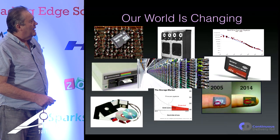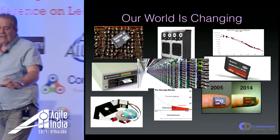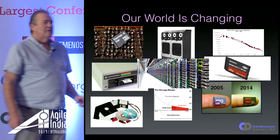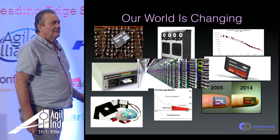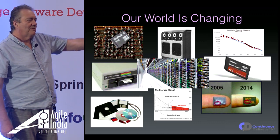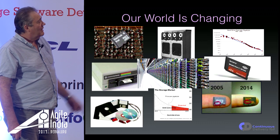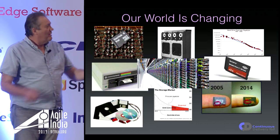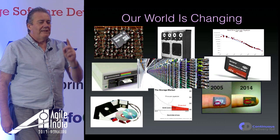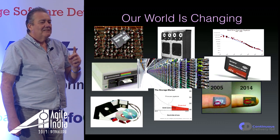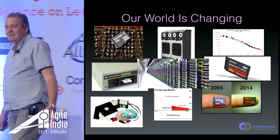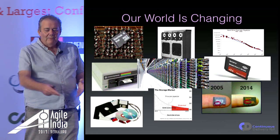That's an 8-gigabyte SD card sitting on top of what's called a ferrite core memory unit. I'm not quite old enough to have programmed computers with ferrite core memory units, but that thing is a memory — each one of those little magnetic rings is one bit. That's the technology of mainframes in the 1960s and 70s.